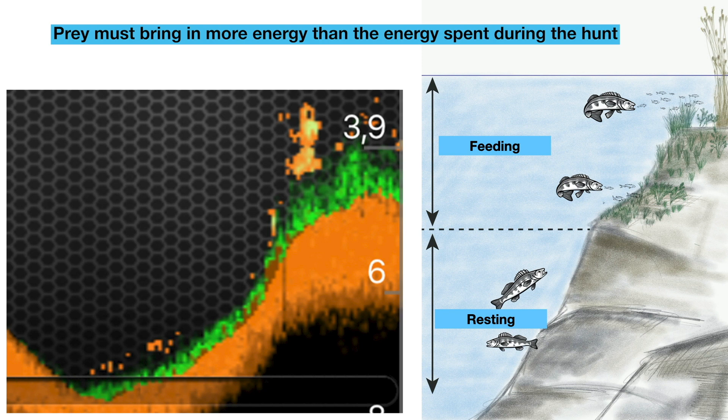It is an unwritten law in the animal kingdom that most predators do not want to waste energy. This means that the prey must bring in more energy than the energy spent during the hunt. The instincts of the predator fish provide the pulse stimulus for hunting. Simulating an easy prey at the right time gives the best chances of catching a big fish. Underwater humps are always a hot spot. This is something to keep in mind, and simply fish at the drop-offs.